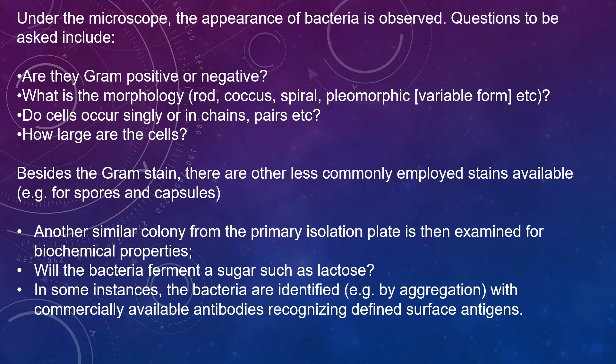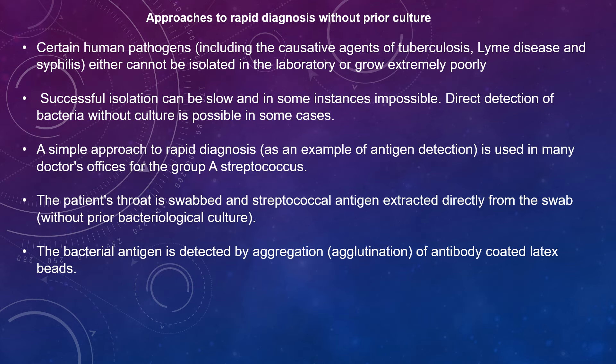Gram staining or other less commonly employed stains are available for detecting spores and capsules. Another colony from the primary isolation plate is then examined for biochemical properties — for example, will the bacteria ferment a sugar such as lactose? In some instances, bacteria are identified by agglutination with commercially available antibodies recognizing defining surface antigens.